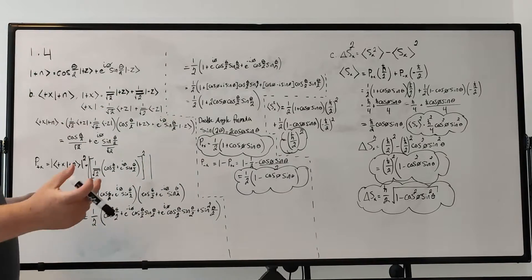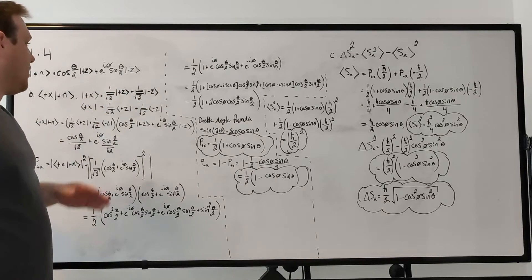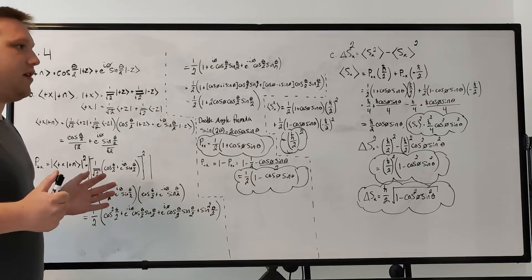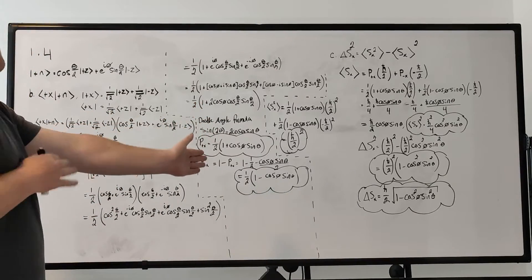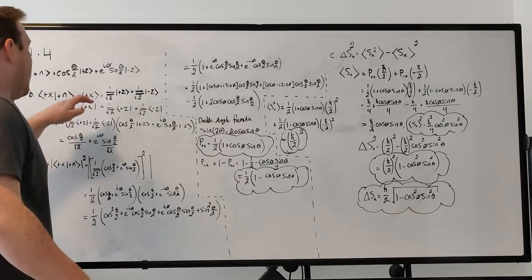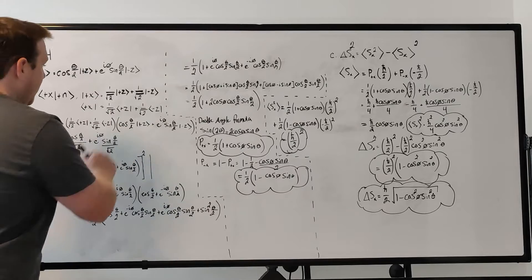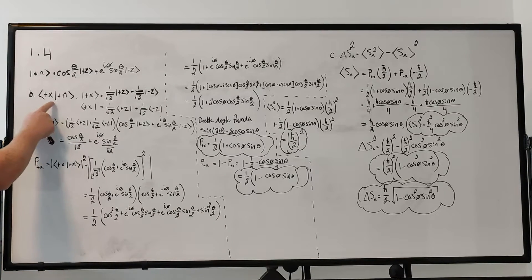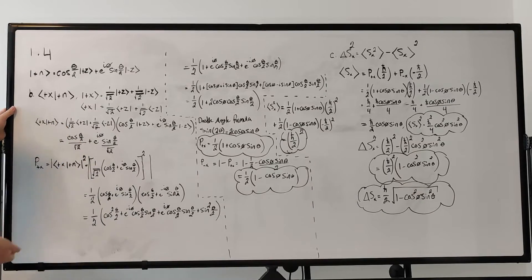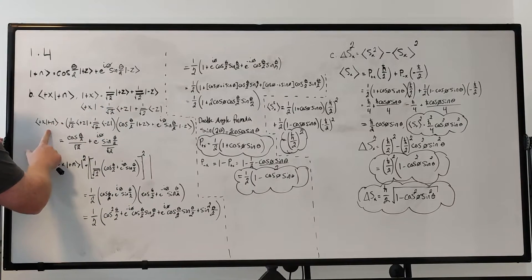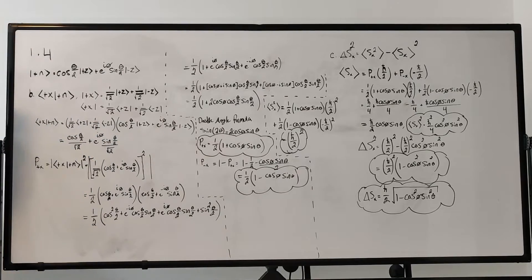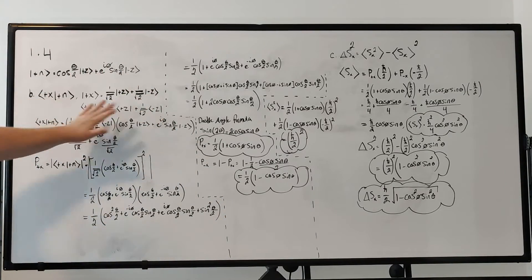So plus x is 1 over root 2 times plus z plus 1 over root 2 times minus z. This comes from the Stern-Gerlach experiments described in chapter 1. If you have a particle in plus x, you get a 50% chance of h-bar over 2 spin and a 50% chance of minus h-bar over 2 spin, which is why we have factors of 1 over root 2. Essentially, we have to find the magnitude squared of this inner product.